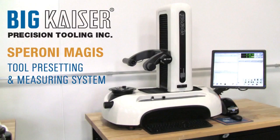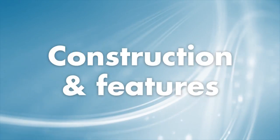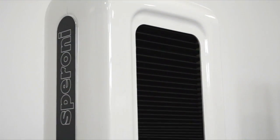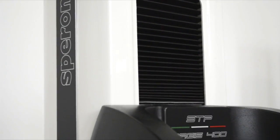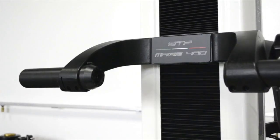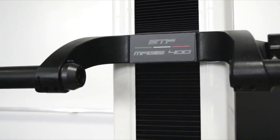The new STP MAGIS generation of tool presetting and measuring systems has revolutionized the value of entry-level tool measurement. As for all Speroni tool presetting and measuring systems, the structure of the MAGIS is completely made of aged paralytic cast iron in order to guarantee the best thermal stability.